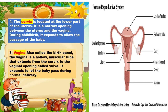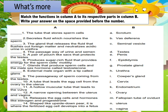The fifth one is the vagina, also called the birth canal. The vagina is a hollow muscular tube that extends from the cervix to the vaginal opening called the vulva. It expands to let the baby pass during normal delivery. I hope this discussion will help you answer our activity for this module.